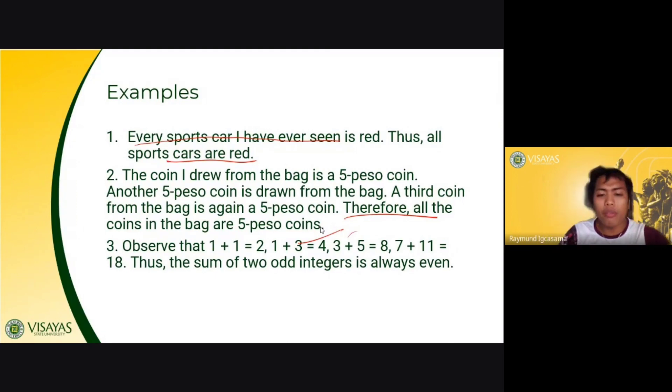Number three. Observe the series. 1 plus 1 equals 2. 1 plus 3 equals 4. And so on. Know that 1 here is odd number. 1 and 3 are odd numbers. 3 and 5 are odd numbers. 7 and 11 are also odd numbers. If you are going to add two odd numbers, so odd plus odd number, this will give you an even number.